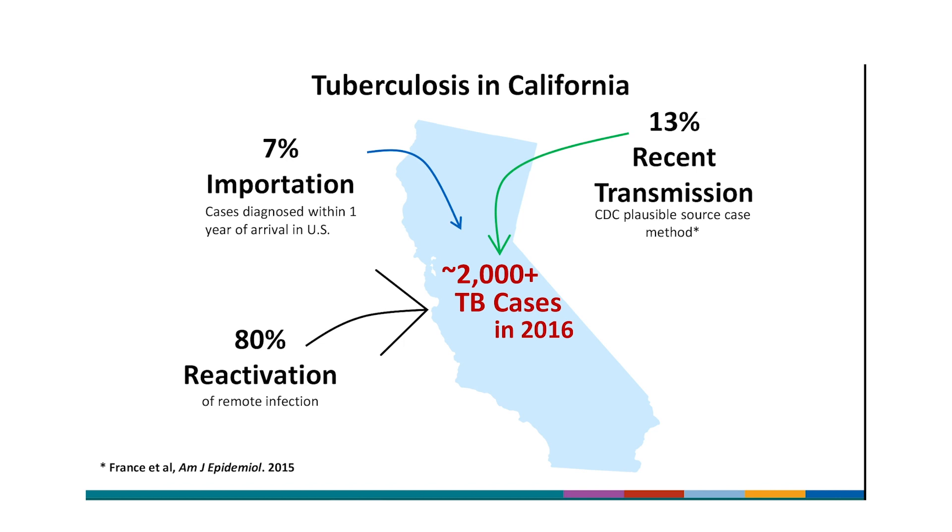This next slide shows some background about TB in California to provide context for our talk. California reported more than 2,000 cases of TB in 2016, more than any other state in the U.S. When we look at why cases occur, there are three primary drivers of morbidity. The reactivation of infection acquired a long time ago is responsible for about 80% of cases. Importation of TB represents about 7% of the cases. Recent TB transmission within California is estimated to be responsible for about 13% of our cases. Our focus today is on recent transmission.